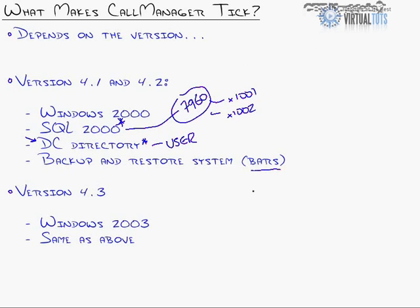Last but not least, you have BARS — Backup and Restore System. This is the utility that helps back up key areas of the Call Manager without backing up the entire server, meaning you don't need to back up all of the software on there because that's just a 30-minute image to install. BARS backs up the database and critical pieces of the Call Manager.